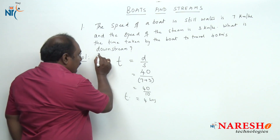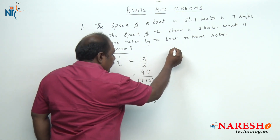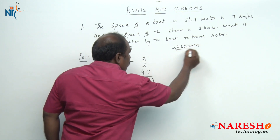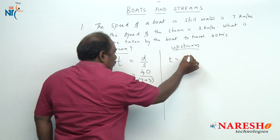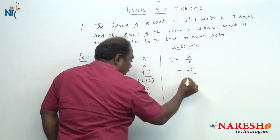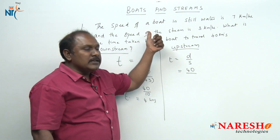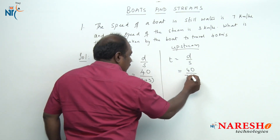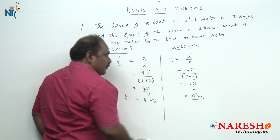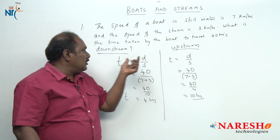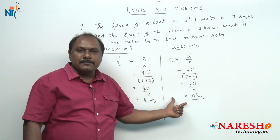If instead we were asked: what is the time taken by the boat to travel the same 40 kilometers upstream? Then time equals distance divided by speed equals 40 divided by the upstream speed, which is 7 minus 3 equals 4. So 40 divided by 4 gives 10 hours. The time taken downstream is 4 hours, and upstream is 10 hours.